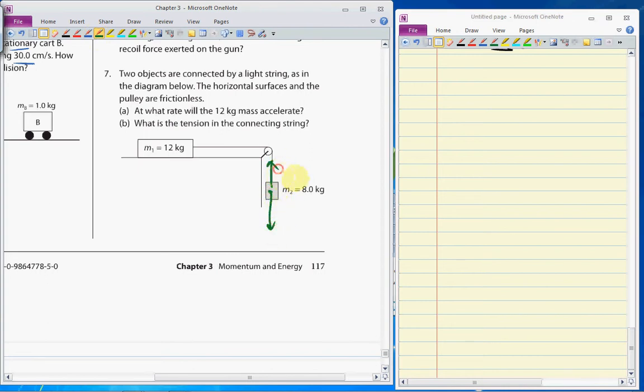So the free body diagram for this looks like this. Tension acting up, M2G acting down. For the other one, it is tension acting to the right, Fn acting up, Fg acting down. It says frictionless surface and frictionless pulley, so there's no friction.